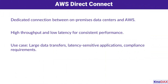Next, AWS Direct Connect. This service creates a dedicated connection between your on-premises data center and AWS, offering high throughput and low latency. This makes it ideal for large-scale data transfers, applications sensitive to latency, or even meeting compliance requirements. With consistent performance and reliability, Direct Connect is the backbone for critical workloads that demand top-tier connectivity.